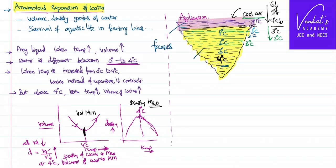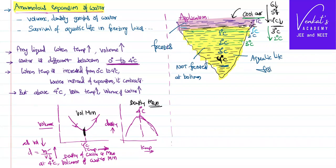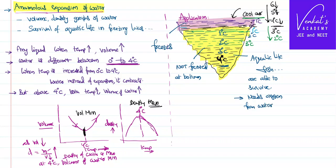Therefore, it is frozen only at the top, but it is not frozen at the bottom. Because of this, all aquatic life — like fish and other animals in the water — are able to survive. Aquatic life needs oxygen from water; fish can absorb oxygen only from water, not from ice. So water has to be available. This anomalous expansion of water is a blessing for all aquatic life, which is able to survive in cold countries under freezing temperatures.